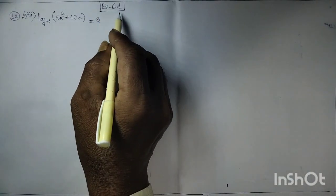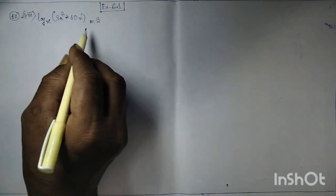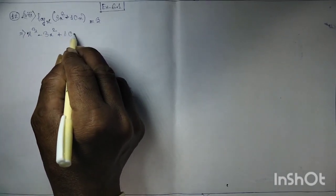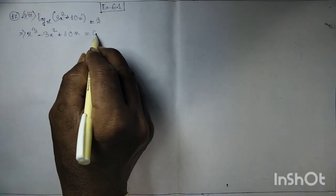Advanced mathematics for Class 9, Exercise 6.1, equation 12. Logarithm sector: log of x³ plus... From the equation, this implies x³ minus 2x² plus terms equals 0. Taking x as common: x squared minus 2x minus t equals zero.